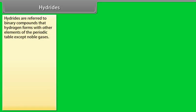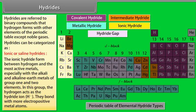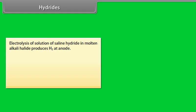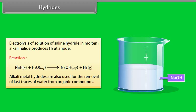Hydrides. Hydrides are referred to binary compounds that hydrogen forms with other elements of the periodic table except noble gases. Hydrides can be categorized as ionic or saline hydrides. The ionic hydride form between hydrogen and the most active metals, especially with the alkali and alkaline earth metals of group 1 and 2 elements. In this group, the hydrogen acts as the hydride ion. They bond with more electropositive metal atoms. Electrolysis of solution of saline hydride in molten alkali halide produces H2 at anode. Alkali metal hydrides are also used for the removal of last traces of water from organic compounds.